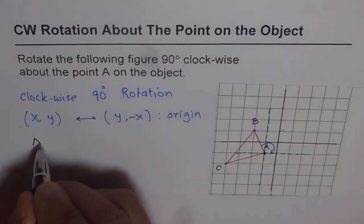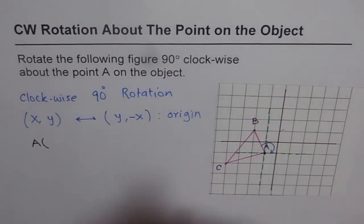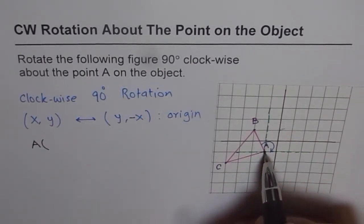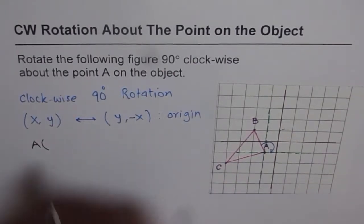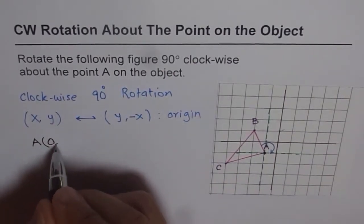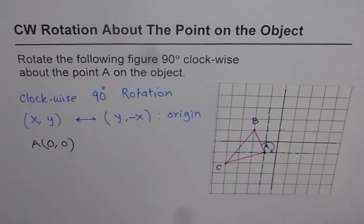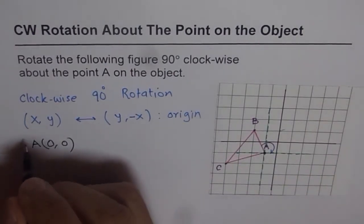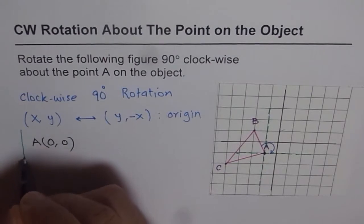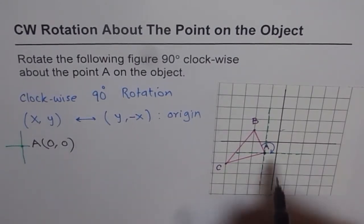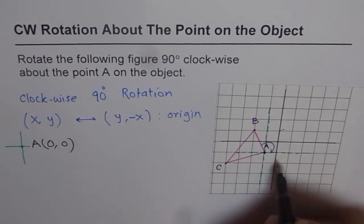For A, the coordinate points in the new system will be (0, 0). Why (0, 0)? Because we are using a system where A is at the origin — the green coordinate system.